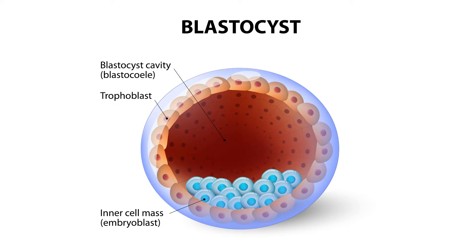A blastocyst is our embryo at 5 days, which we call a blastocyst. There are three parts of the blastocyst. The outer part is called the placenta, which creates and secretes progesterone hormone. In the initial pregnancy, the beta-hCG hormone is secreted, which supports the pregnancy, and later the placenta works to supply blood to the baby. The inner cell mass of the blastocyst forms the baby's organs. The fluid around the inner cell mass is where the amniotic fluid starts from.